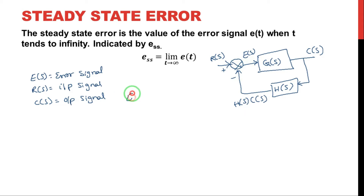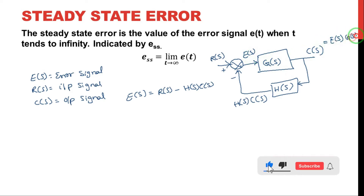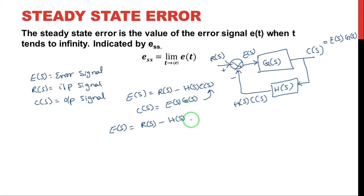Now we can say that error signal E(s) is equal to R(s) minus H(s) into C(s). Where C(s) is equal to the forward gain into E(s), the error signal — that is E(s) into G(s). Now by substituting the C(s) value into the first equation, then error signal E(s) is equal to R(s) minus H(s) into, in the place of C(s), we substitute E(s) into G(s).